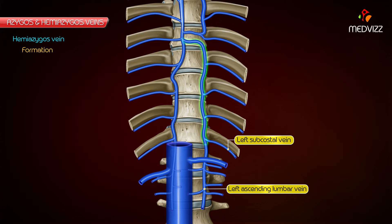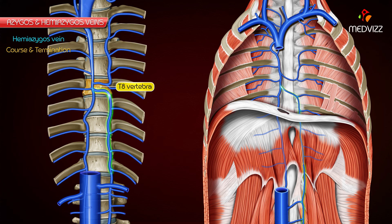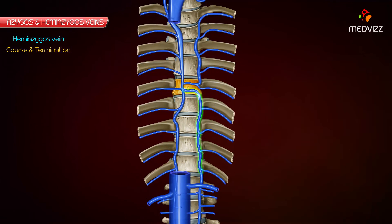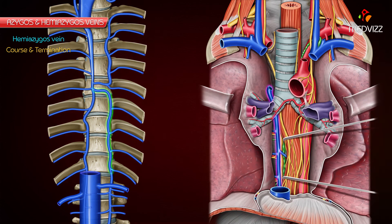It may arise from the posterior surface of the left renal vein. Course and Termination: It pierces the left crus of the diaphragm and ascends vertically in front of the left side of the vertebral column, up till the level of the 8th thoracic vertebra. At the 8th thoracic vertebra, it turns to the right and crosses in front of the vertebral column, posterior to the aorta, esophagus, and thoracic duct to terminate into the azygous vein.